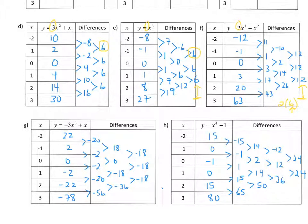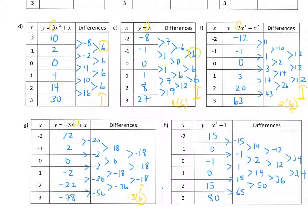This pattern holds for quadratics too — it's the lead coefficient times two. For part G with a cubic and leading coefficient negative three, negative three times six gives negative eighteen. Now for degree four, I wonder how that constant relates to the degree. Looking at the degree four example, we get twenty-four, and since the leading coefficient was one, it must be one times twenty-four. But how does twenty-four relate to the exponent of four? Let's figure that out.